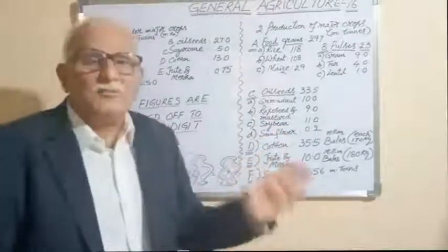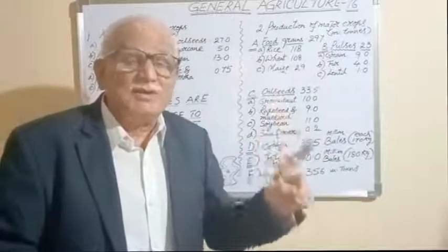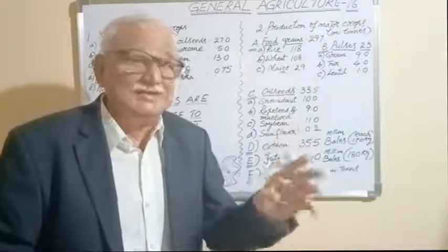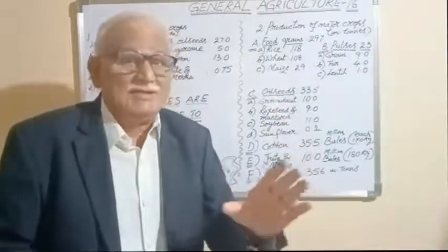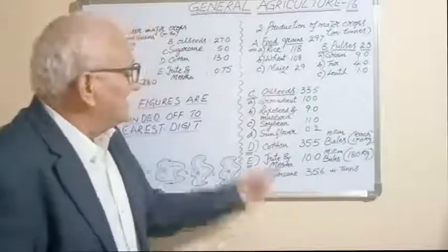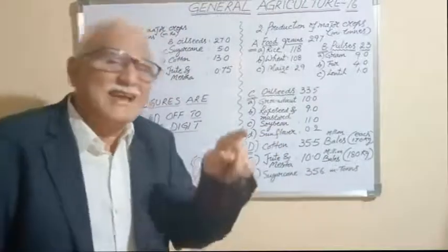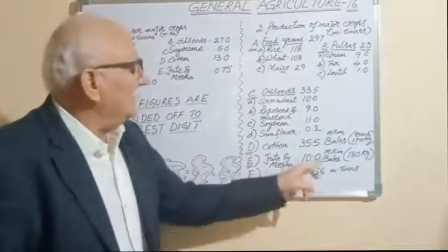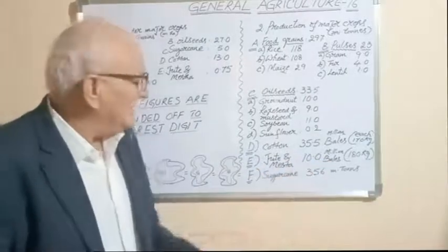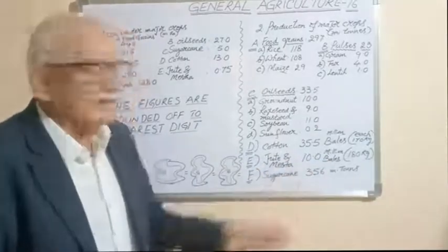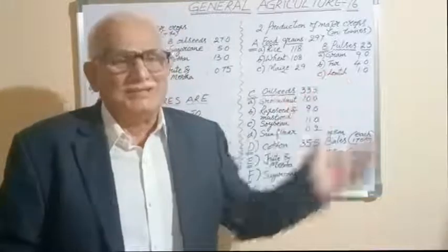Cotton production is 35.5 million bales, with each bale weighing 170 kg. For jute and mesta, each bale is 180 kg, with total production of 10 million bales. Sugarcane production is 356 million tons. These are the general production figures.